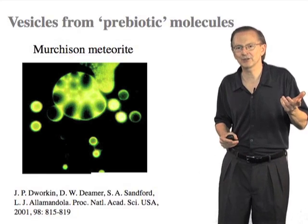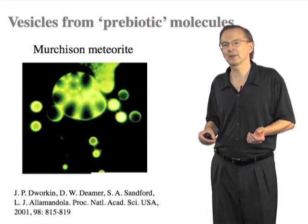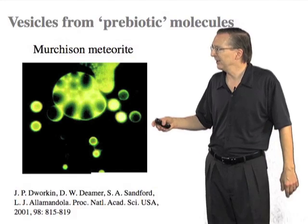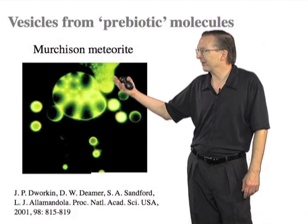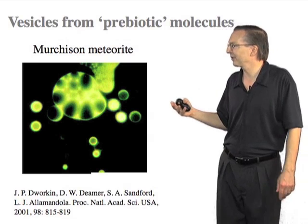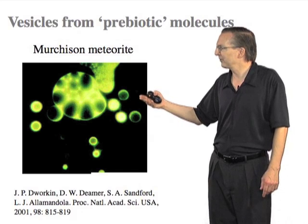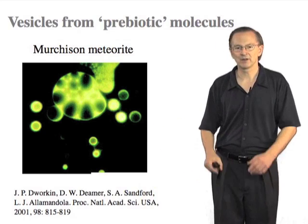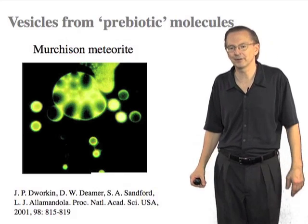It turns out it's actually very easy to make molecules like that in a variety of different scenarios. Dave Diemer and his colleagues showed that you can extract molecules from the Murchison meteorite — one of these carbonaceous chondrite meteorites rich in organic materials — that will self-assemble into vesicles, as you can see here. They spontaneously make membrane sheets that close up into small vesicles.